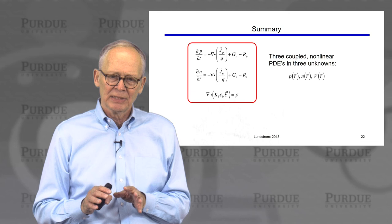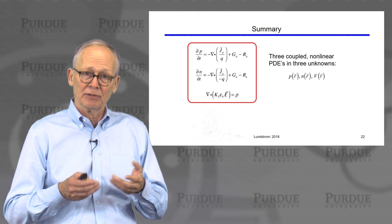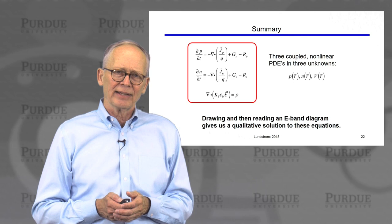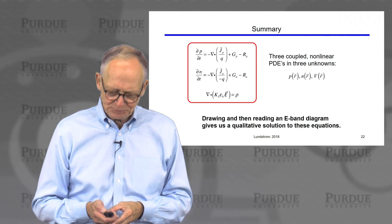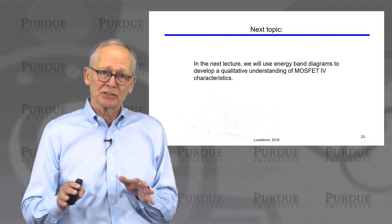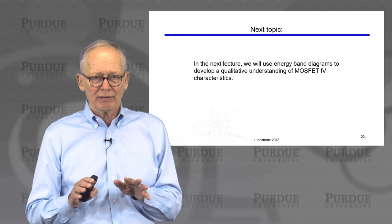To summarize: energy band diagrams are very useful for providing a qualitative solution to the semiconductor equations. If we want numerical answers, we would solve the continuity equations for electrons and holes self-consistently with the Poisson equation. But energy band diagrams are a remarkably simple way to get qualitative insight into what the solutions to these equations look like. In the next lecture we will draw energy band diagrams of MOSFETs, and we will find that this is a very simple, very physical way to understand how MOSFETs operate.